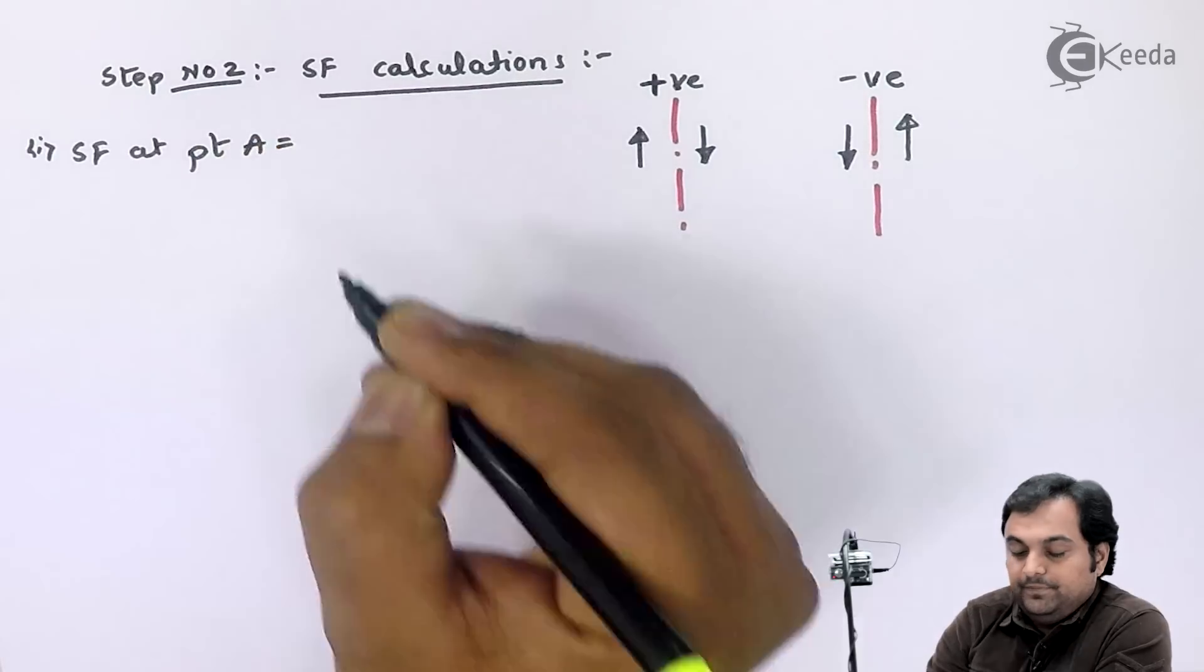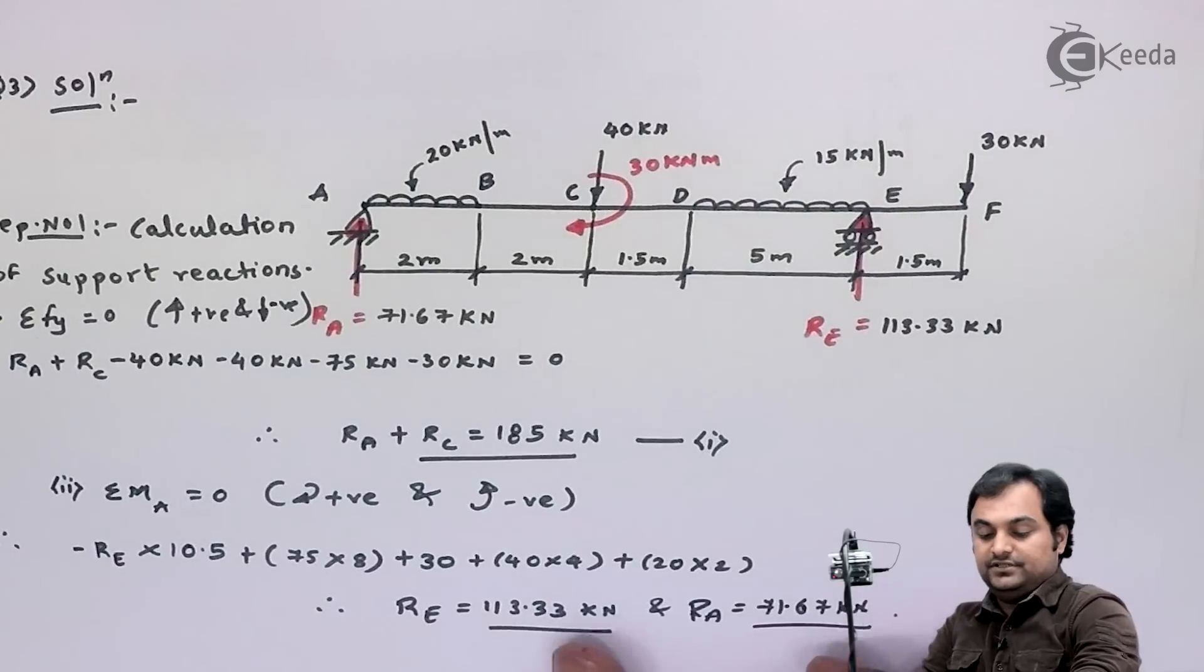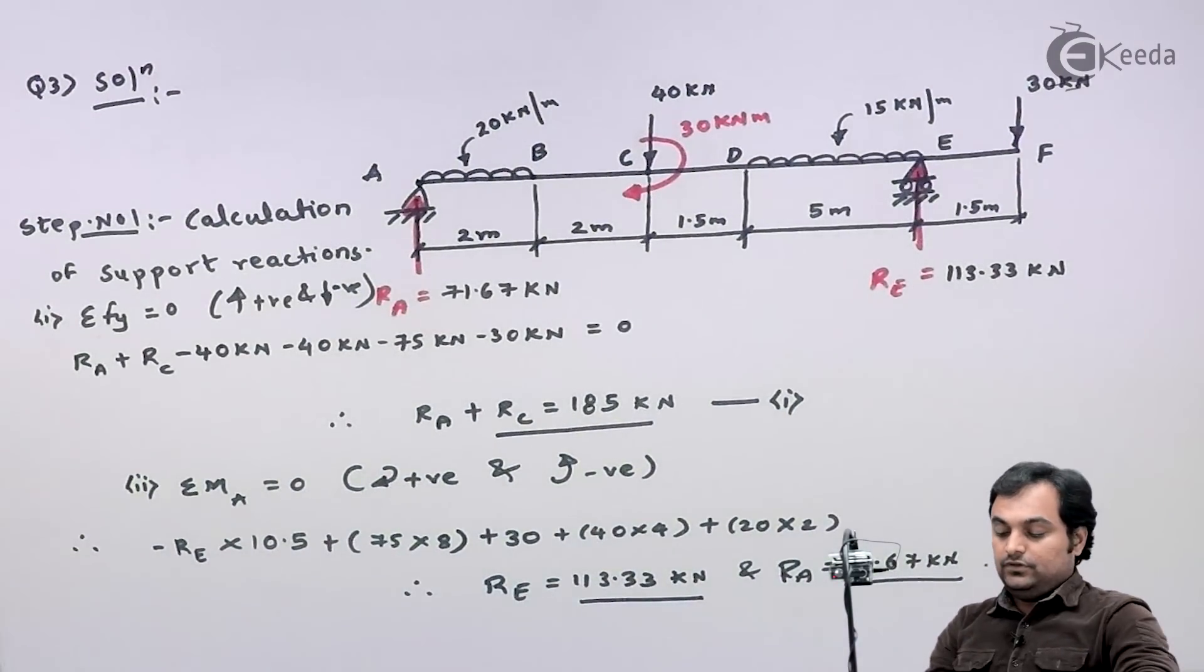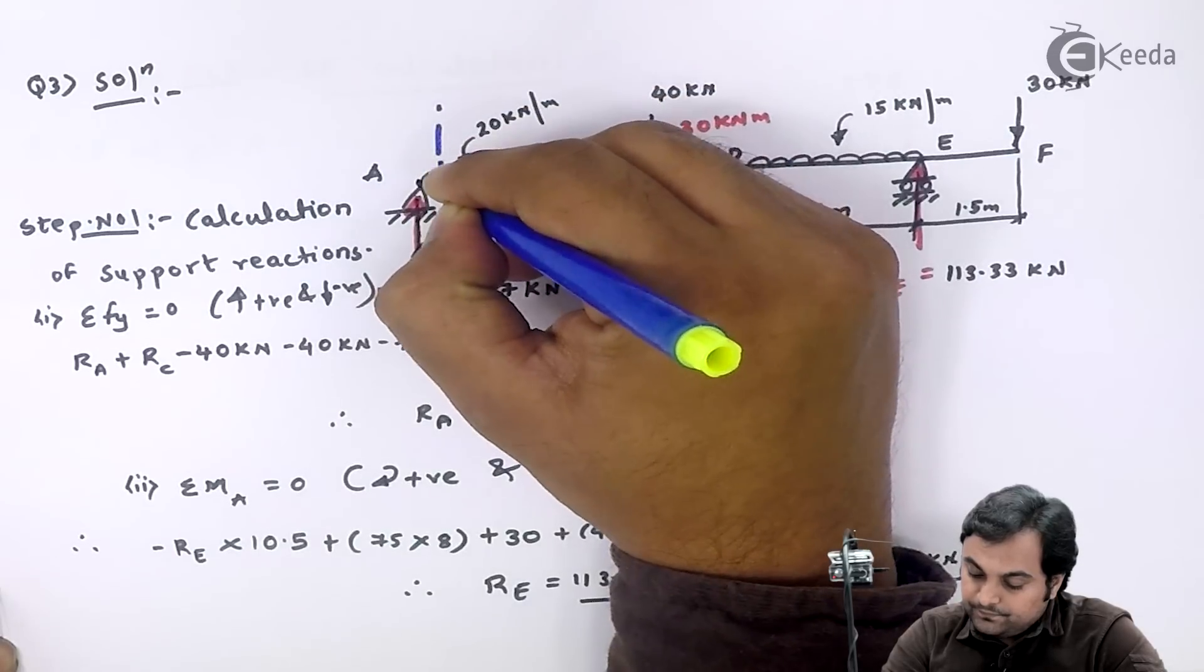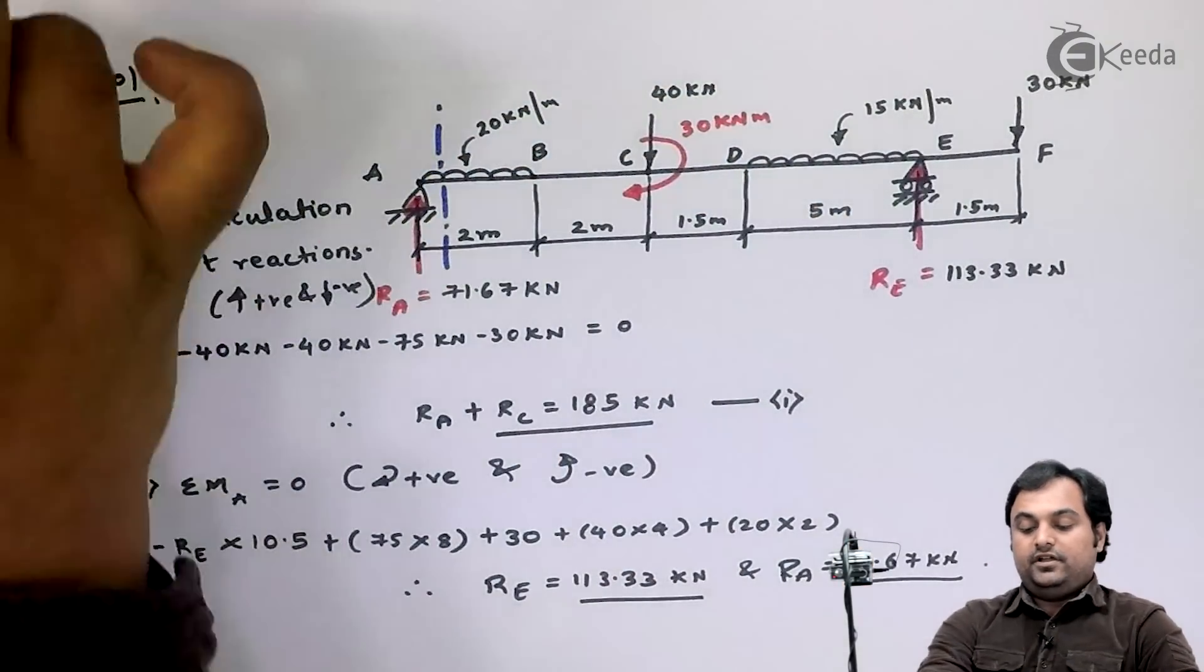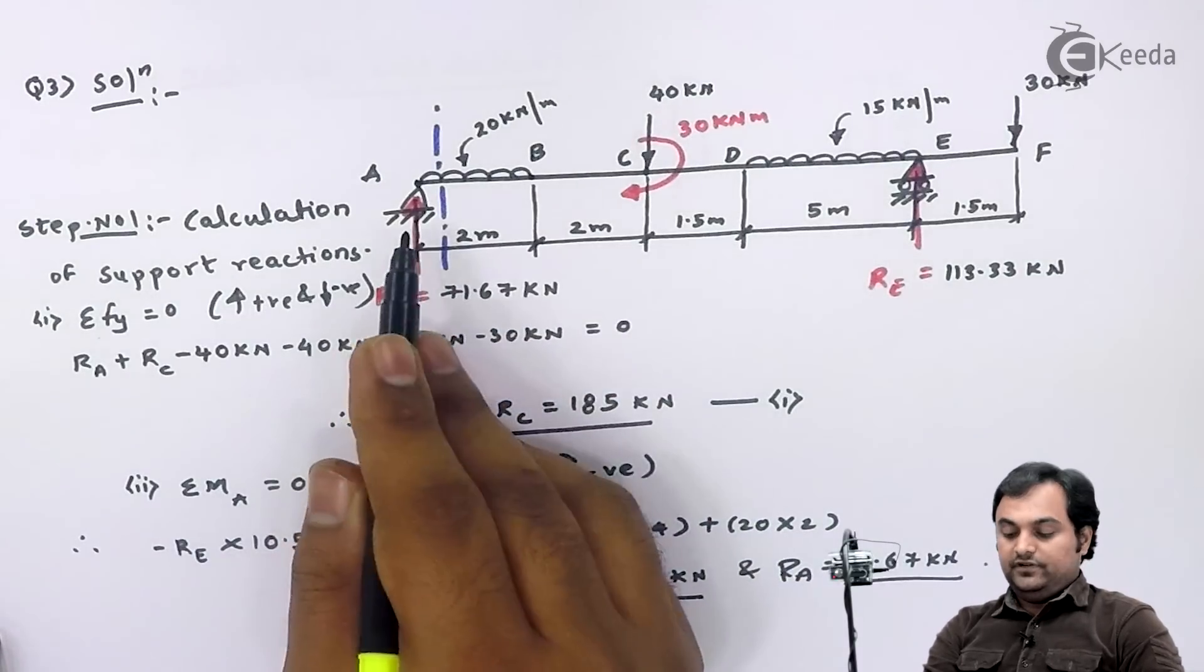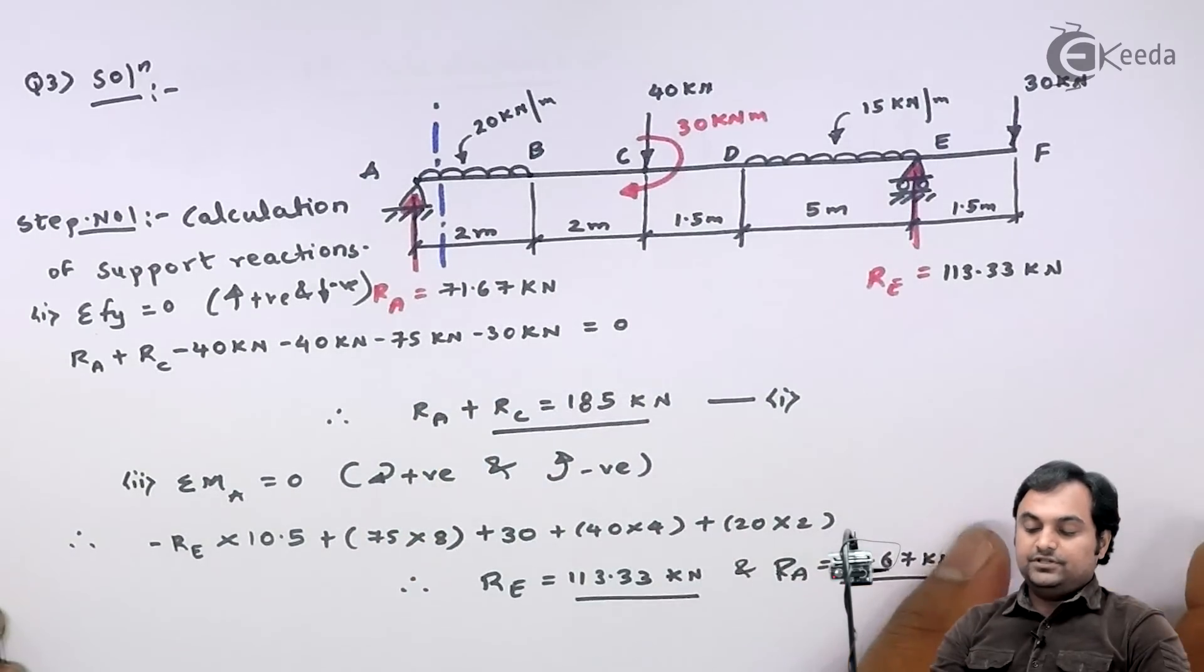SF at point A: my assumption is that the section is just to the right of A. So now if I'm taking this section to the left of that, I have only one force and it is upward, so positive. That is 71.67 kN.